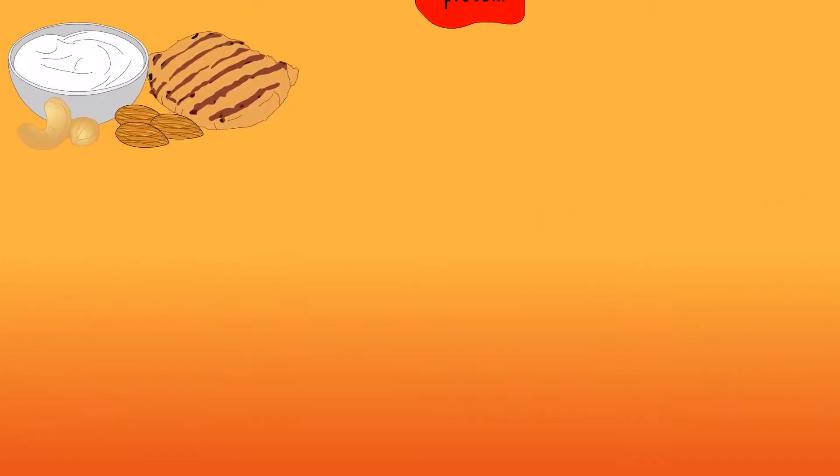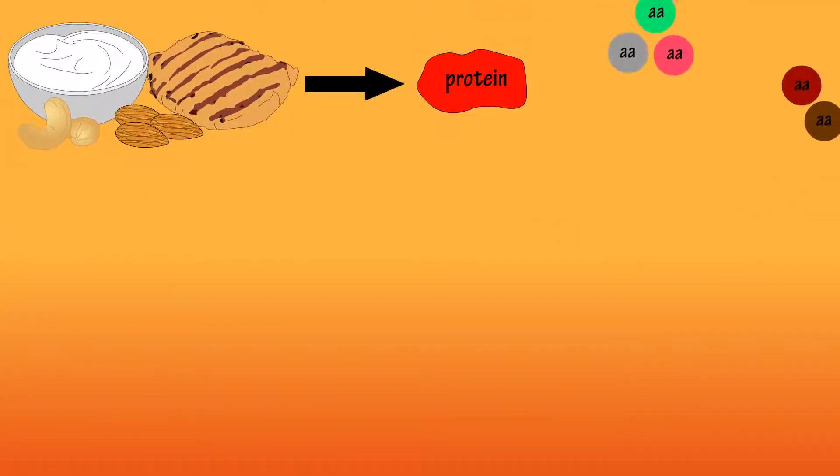So when we eat foods that contain protein, in essence we are eating amino acids. However, not all protein contains all 20 of the standard amino acids.